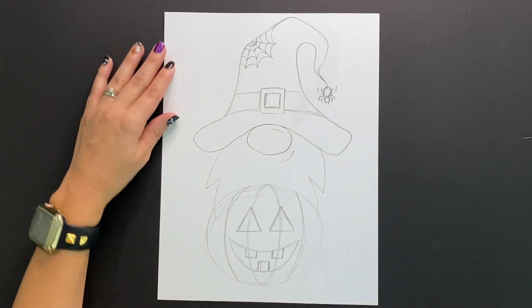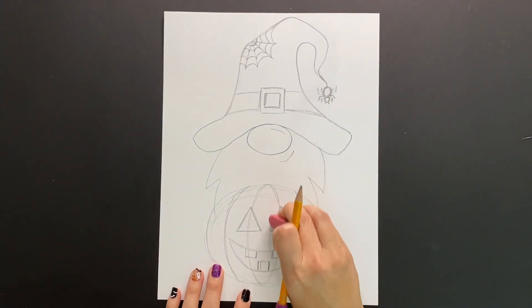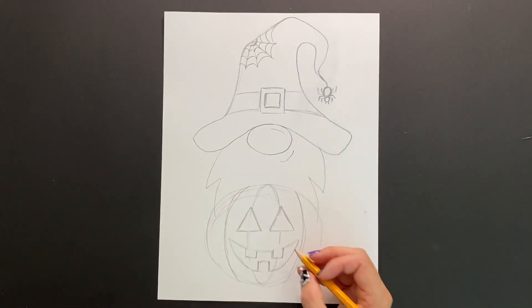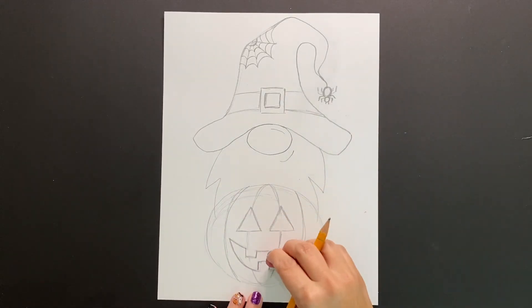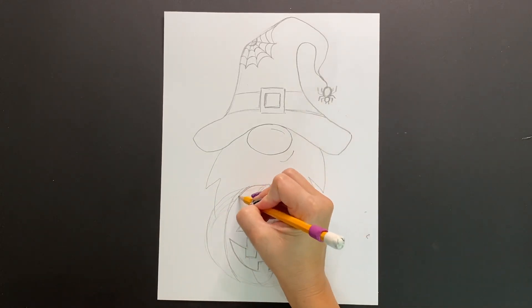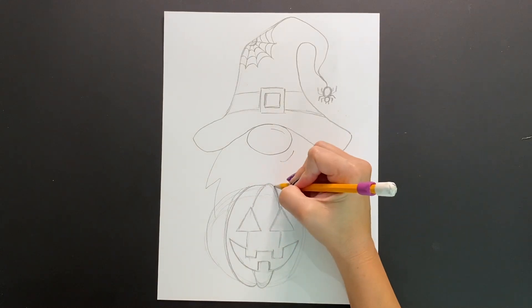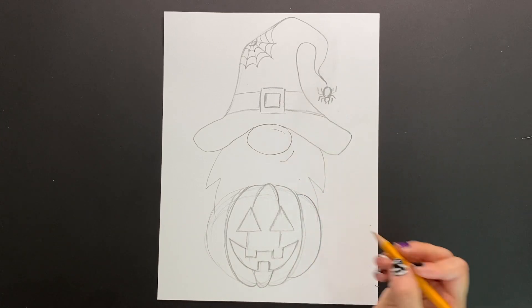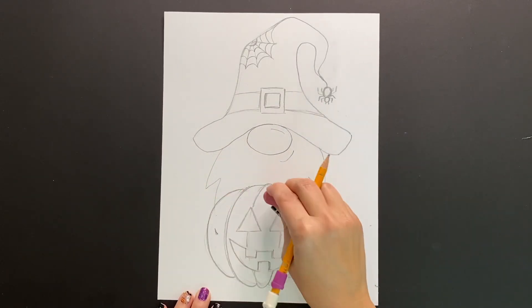Now that I have my pumpkin's face drawn in, it's time to grab your eraser and erase some of those lines that go through the eyes and the mouth. And now it's time to make my pumpkin look a little bit more like a pumpkin. So I'm going to just round out and curve around some of my edges to make it have just a little bit more of a three-dimensional quality and more like a pumpkin. Now I can darken up my lines. After that, I'm going to work on my stem and my leaves.